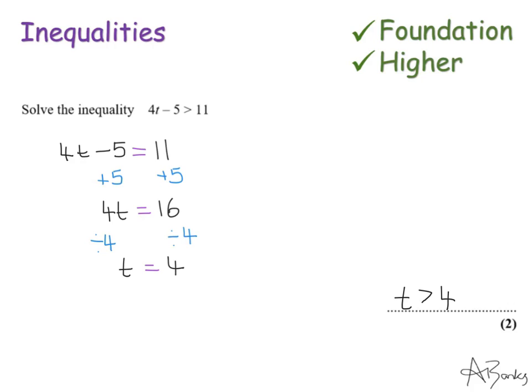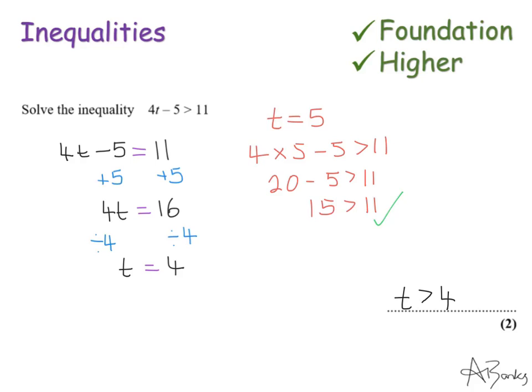We can check that this works. I'm saying any number where t is greater than 4 will work in this inequality, so I'll pick 5. That gives 4 times 5 minus 5 is bigger than 11, which is 20 take away 5 is bigger than 11, so 15 is bigger than 11 — and that's correct and true. So I know I've tested out my inequality and done this right.